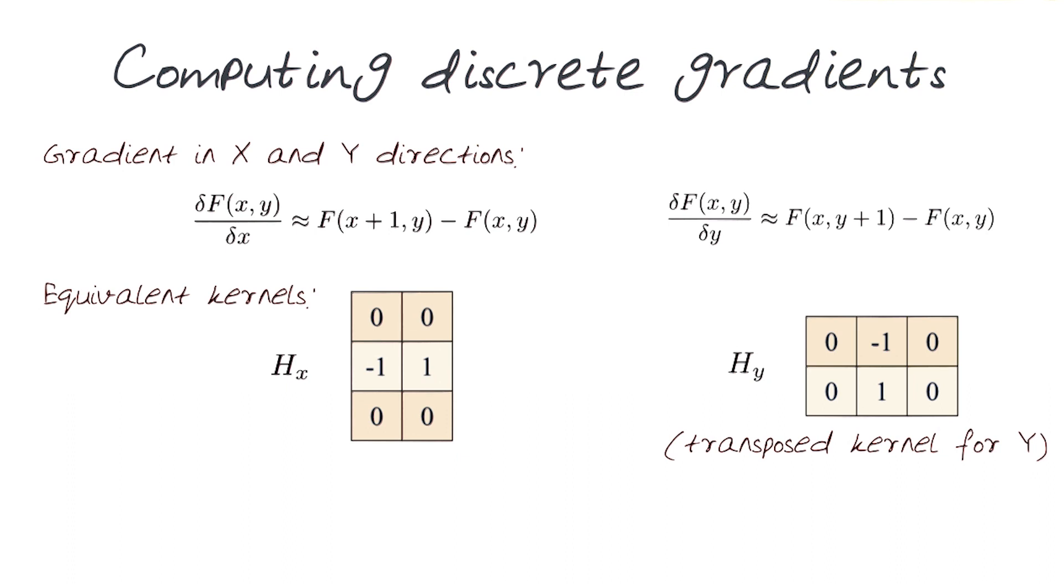So far we're talking about computing gradients using cross-correlation, basically using Hx and Hy as the two kernels. Those who remember our conversation about cross-correlation and convolution should be able to easily predict how we would use the method of convolution here.